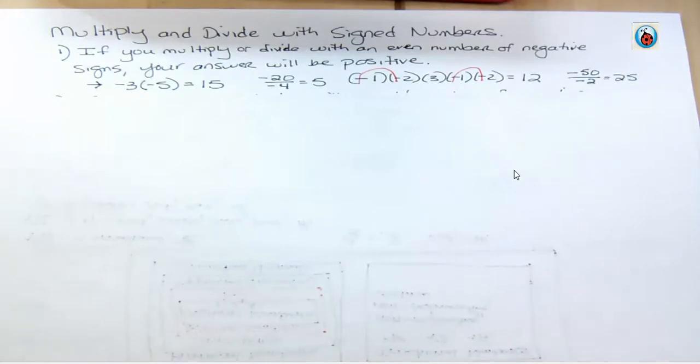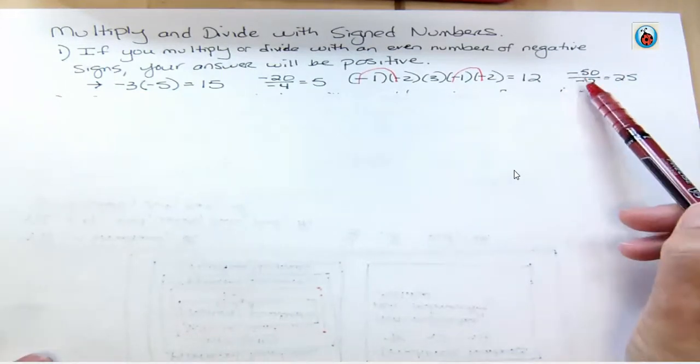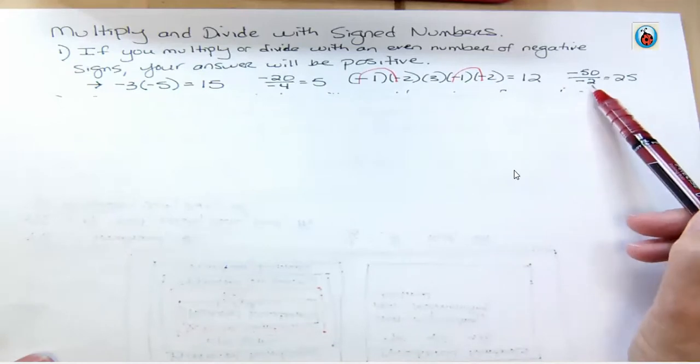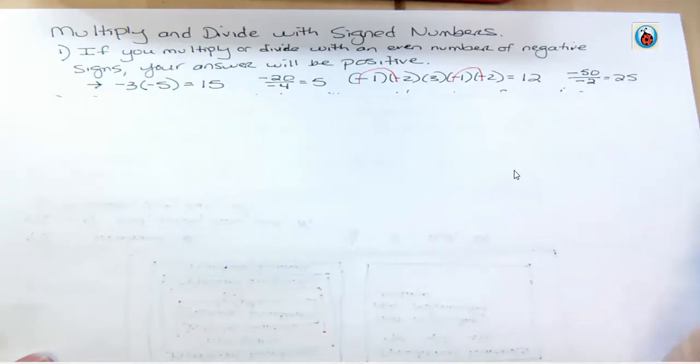And now here for the last one, again, these two negatives cancel each other out. Negative 50 and negative 2 would be positive 25. That's the first rule. If you have an even number, you get a positive answer.